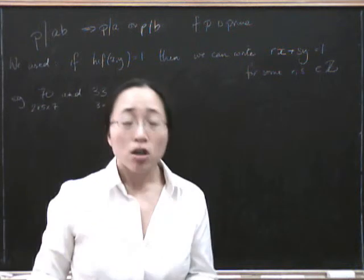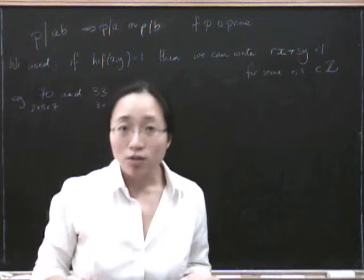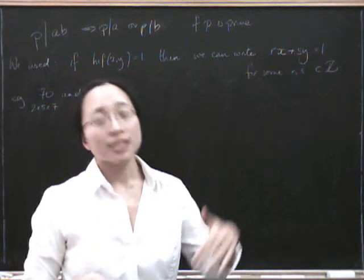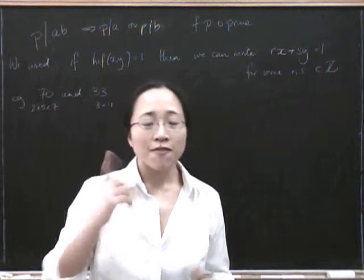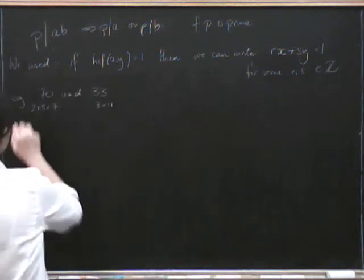But of course, if we didn't know in advance, if the numbers were too difficult to do in our heads, we could run Euclid's algorithm forwards in order to see what the highest common factor was. And in fact, that's what we're going to do first. So we apply Euclid's algorithm.